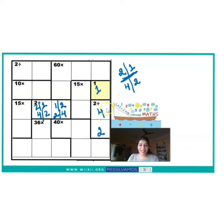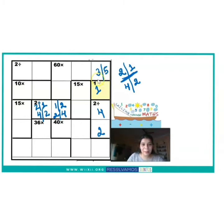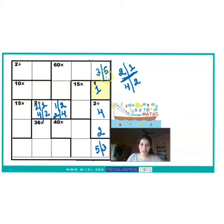Now if you look at the fifth column, the numbers 1, 4, and 2 are already used. So the only two numbers remaining are 3 and 5. Either 3 comes in one cell and 5 in the other, or vice versa. With this, we have found most of the numbers in the fifth column.